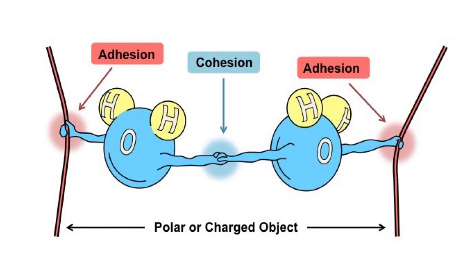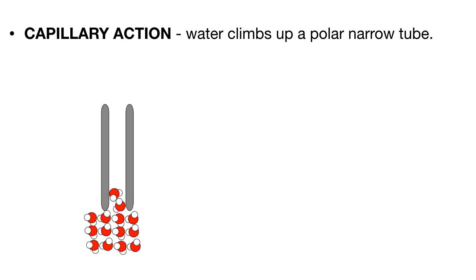This property of water is called adhesion. So adhesion and cohesion are similar properties of water and they often occur simultaneously when water is found in a polar container or on a polar surface.